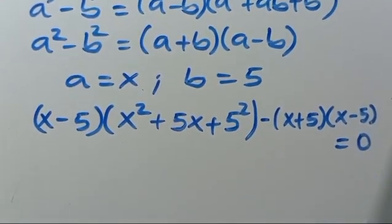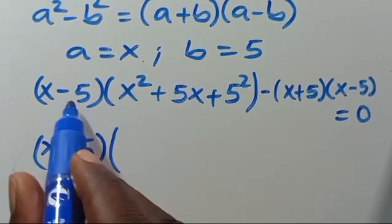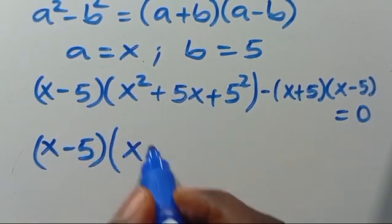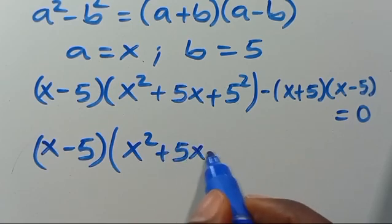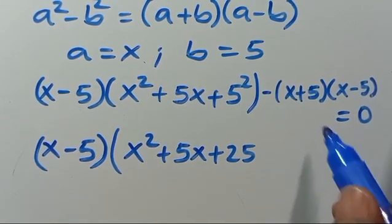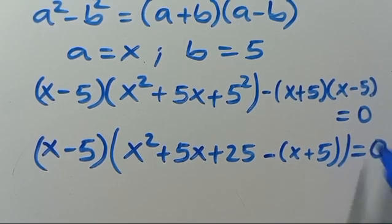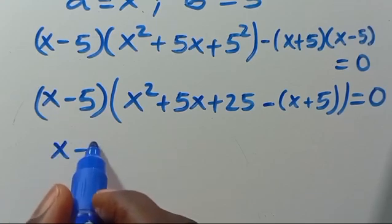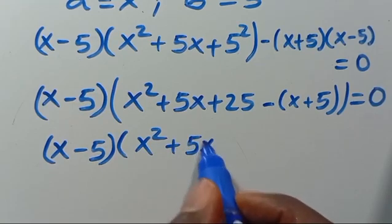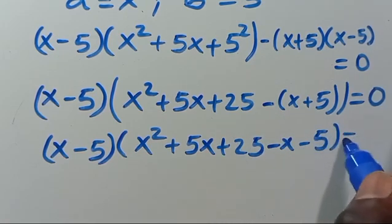From here, X minus 5 is common so we can factor it out. It will be X minus 5, and dividing through by X minus 5 leaves us with X squared plus 5X plus 25 from the first term. Dividing the second term leaves minus into X plus 5, equals 0. So we have X minus 5 times the quantity X squared plus 5X plus 25, minus X minus 5, equals 0.